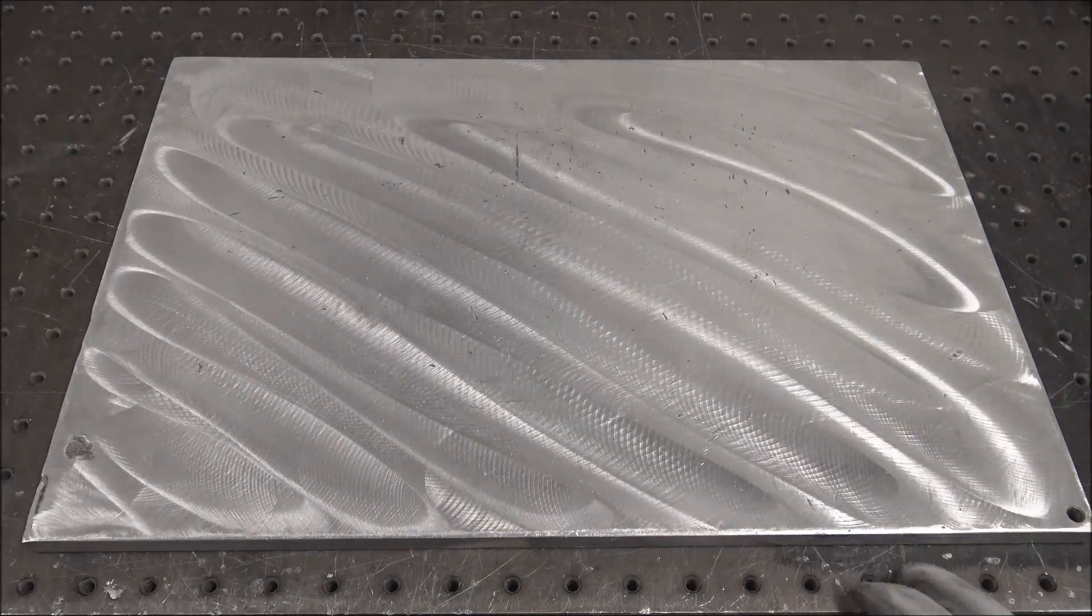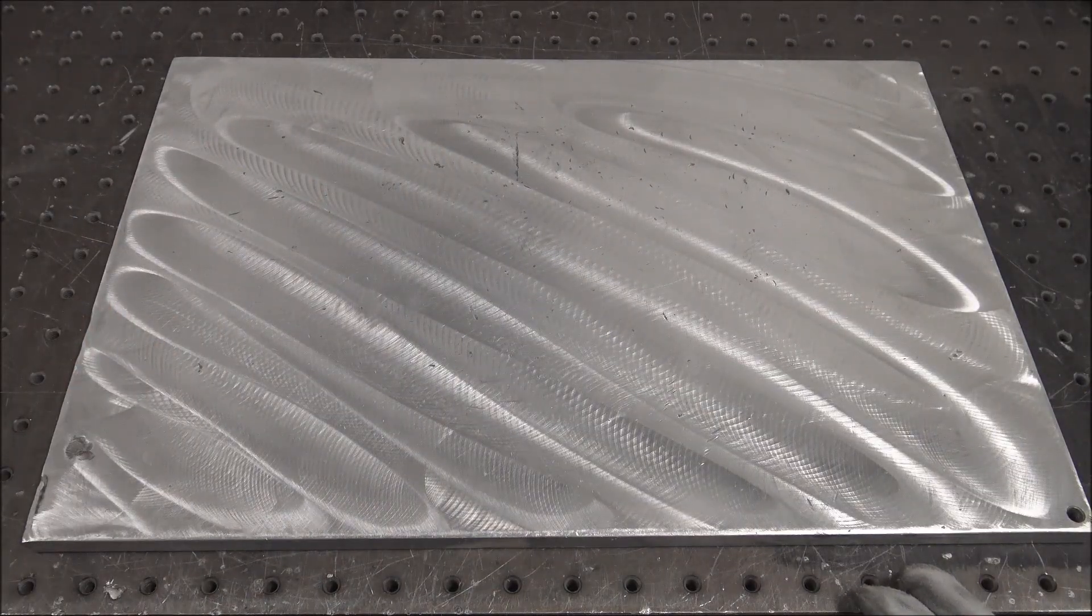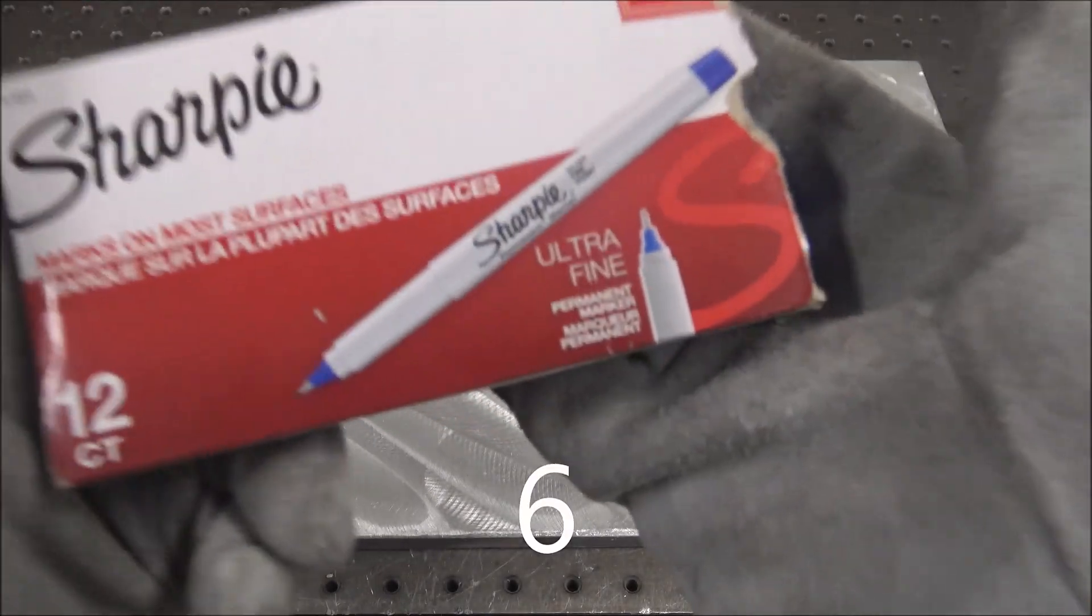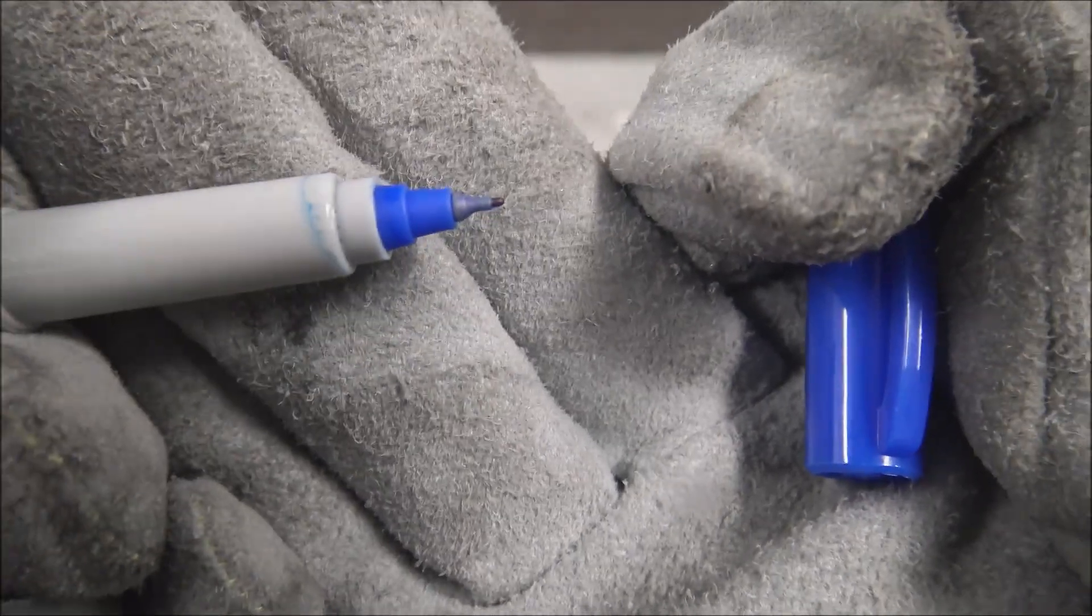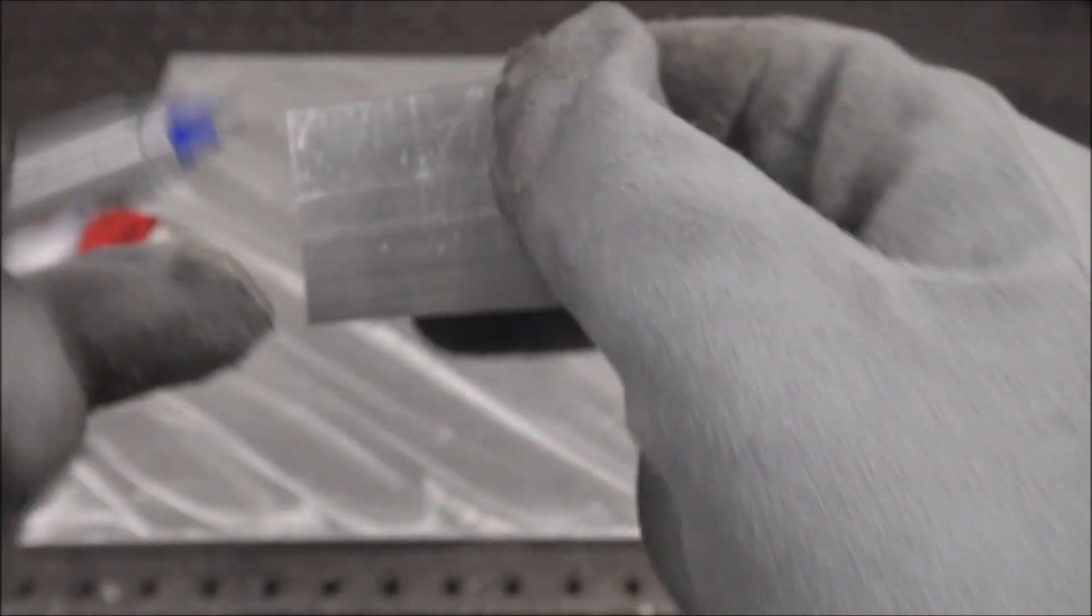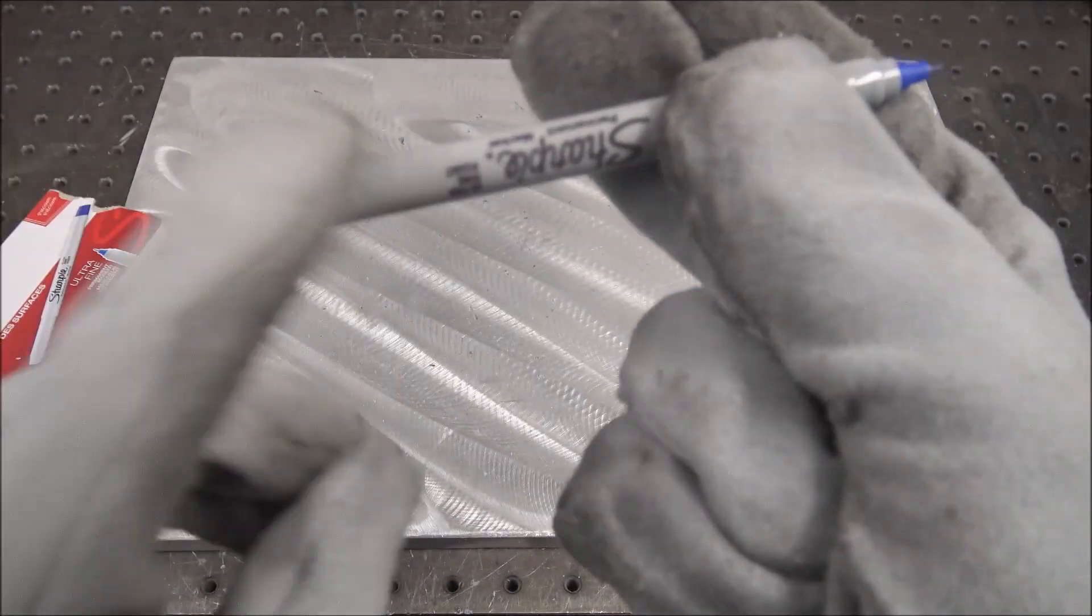Ultra fine point Sharpies. These are a lot more accurate to mark aluminum than bigger Sharpies. This is my favorite brand too—I've tried several others. My favorite color is blue or black.